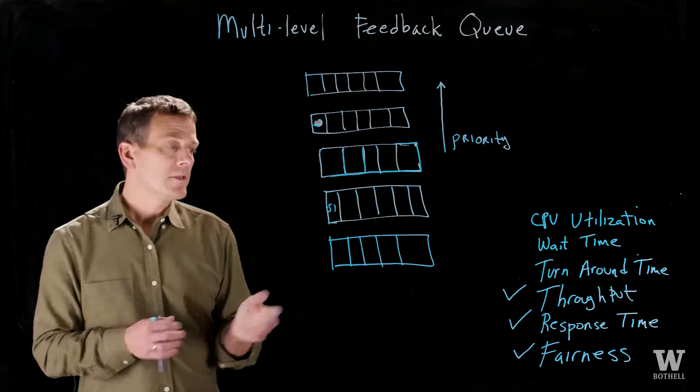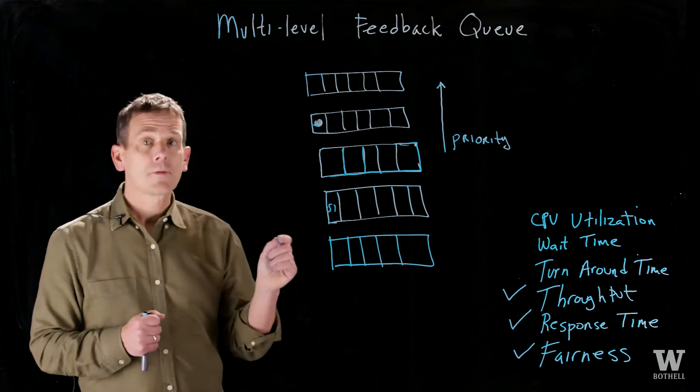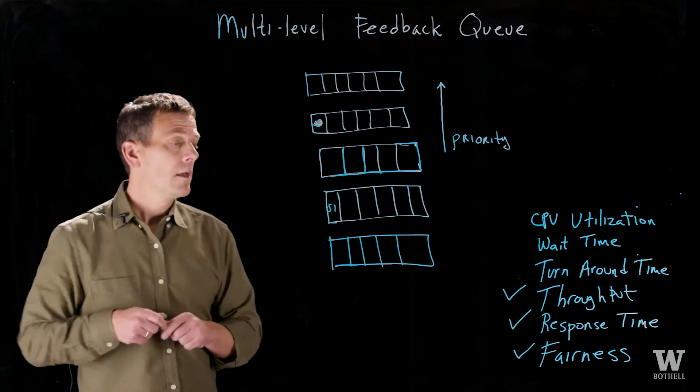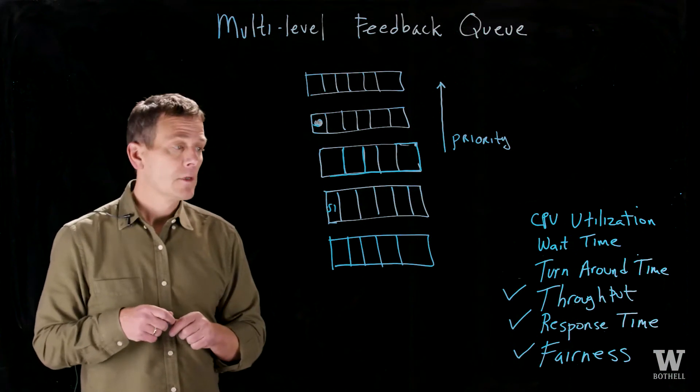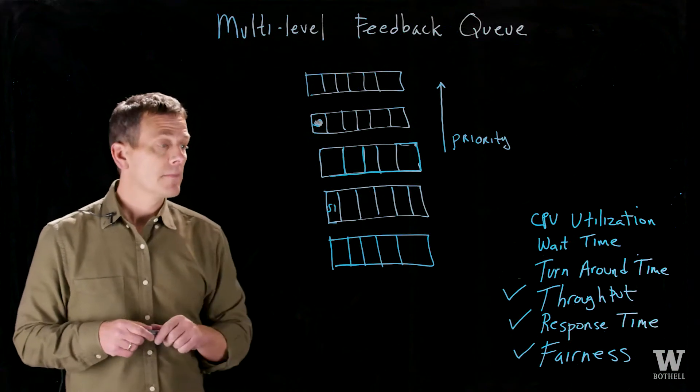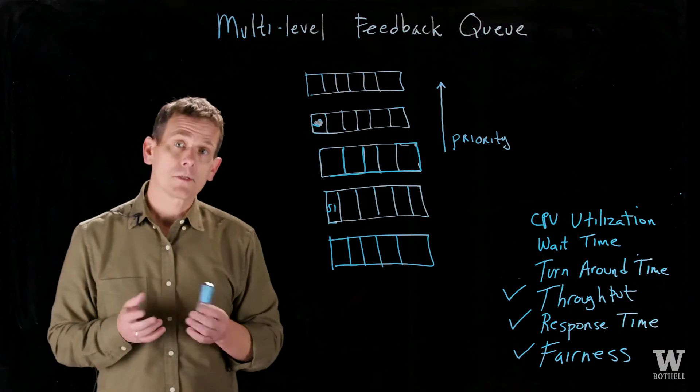What you'll find is that these are in tension with each other. Higher throughputs often come at the cost of response time. Better response time sometimes hurts throughput. So balancing all these things in a system is a tricky situation that the scheduler deals with.